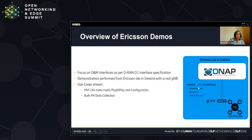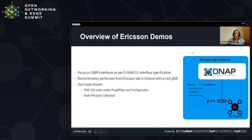The Ericsson demo at the first ORAN plugfest focused on the O1 interface used by the 5G RAN network function to work with the service management orchestrator implemented by ONAP. The demo was performed from an Ericsson lab in Ireland where an ONAP El Alto release was installed to work with a real Ericsson gNodeB. We demonstrated two use cases: plug and play and bulk PM data collection. With the help of ONAP, it was possible to show gNodeB event notification, configuration operation, and data file transfer based on ORAN Alliance O1 specification. TLS protocol was used over all interfaces to provide secure connection.